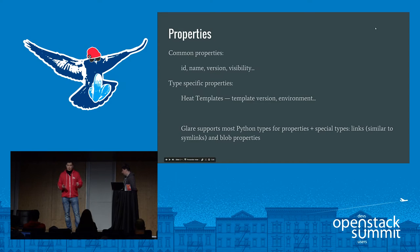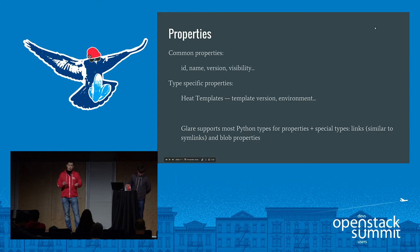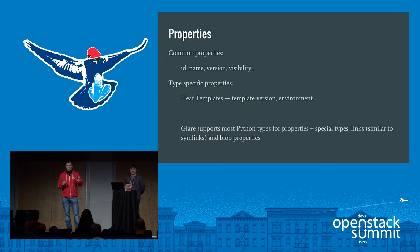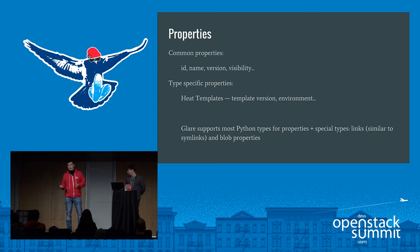The properties allowed for each artifact type can be split into two main groups. Common properties are present in each artifact type — ID, name, version, creation date, status, and many others. And type-specific properties are exclusive to the type, like for Heat template: template file and template version; for Tosca template: the Tosca template file; and for Glance image: version and format.